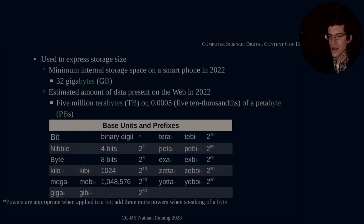And a byte is used to express storage size. So the minimum internal storage space on a smartphone in 2022 is 32 gigabytes. Notice gigabytes versus gigabits. And the estimated amount of data present on the web in 2022 is 5 million terabytes, or 5 ten thousandths of a petabyte.